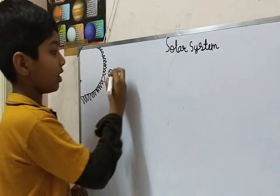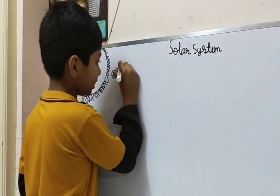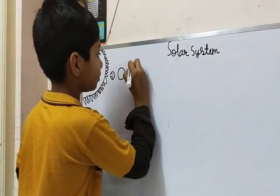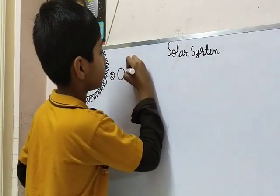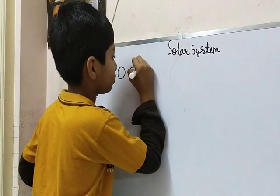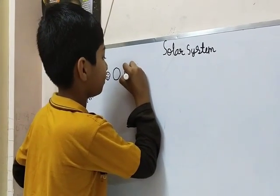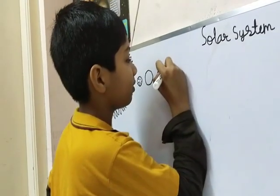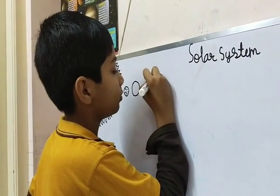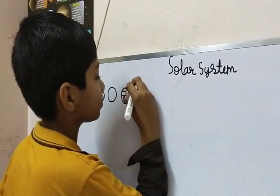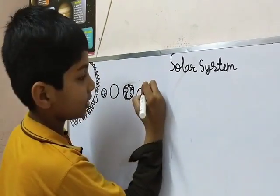Now this is Mercury. This is Venus. This is the Earth, where we live. This is Mars.